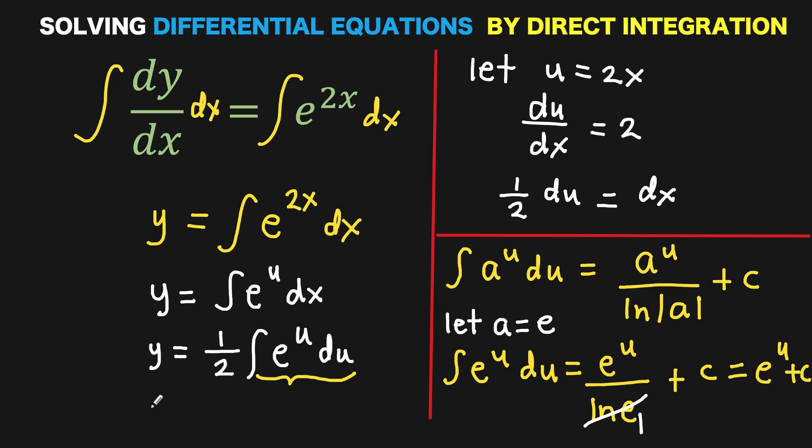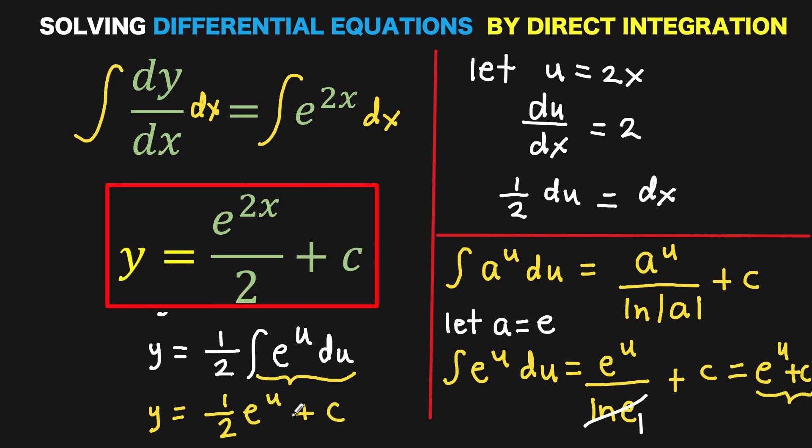That means we can now replace this part by e to the u plus c. So we now have y equals one-half times e to the u plus c. And this is now the general solution to our given differential equation dy over dx equals e raised to 2x.